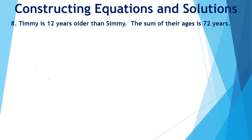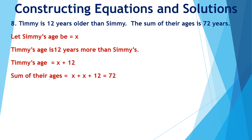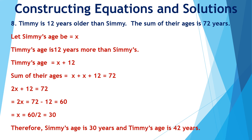Timmy is 12 years older than Simmy. The sum of their ages is 72 years. Let Simmy's age be x years. Timmy is 12 years older than Simmy, so Timmy's age is x plus 12. The sum of their ages equals 72, so x plus (x plus 12) equals 72. On solving, we get x equal to 30. So Simmy is 30 years old and Timmy is 30 plus 12, which is 42 years old.